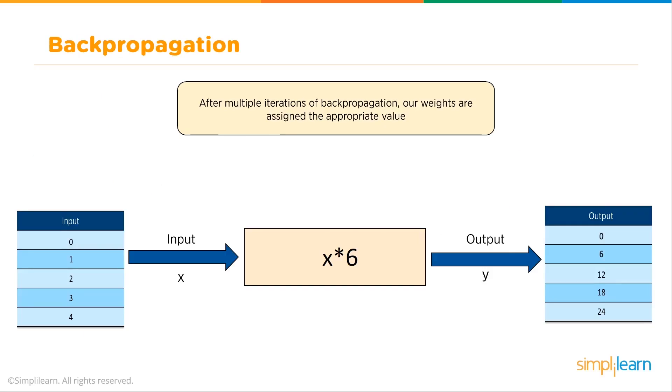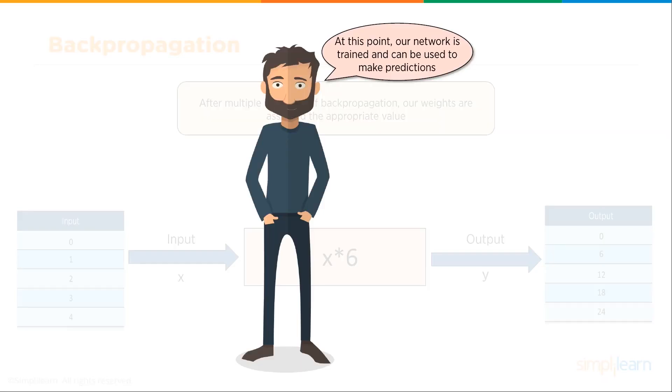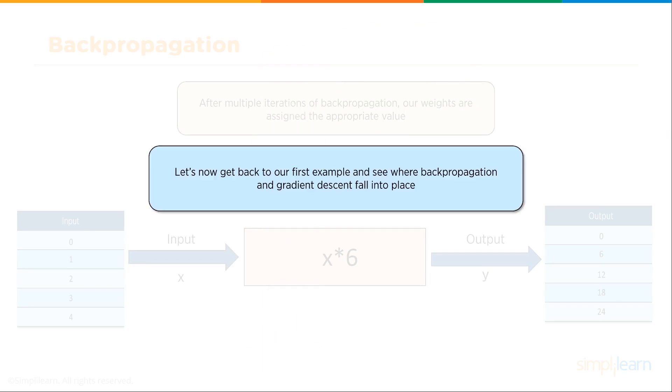After multiple iterations of backpropagation, our weights are assigned the appropriate value. We have our input we just looked at, X times 6 in our output. Eventually we get it that the weight is 6 for the single node problem that we're working on. At this point, our network is trained and can be used to make predictions.